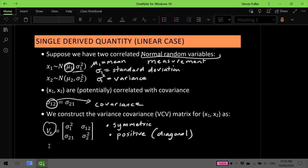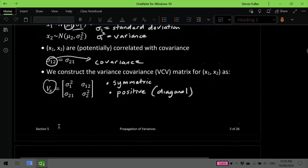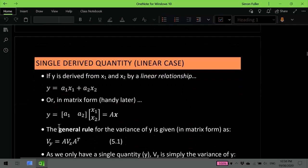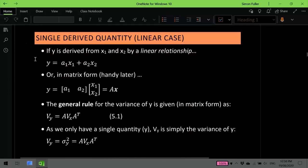So that's the information we're starting with about our two measurements or normal random variables. Now if we were to calculate some quantity here, y, based on a linear relationship of those two measurements, we would express it like this. Or in matrix form like this.